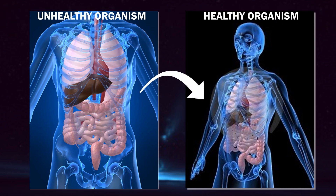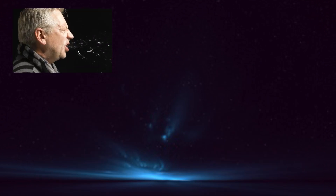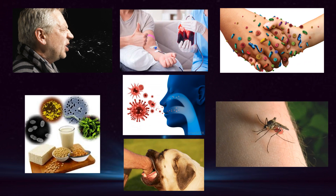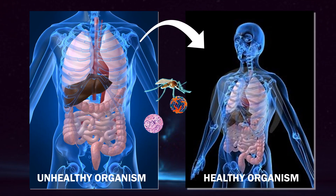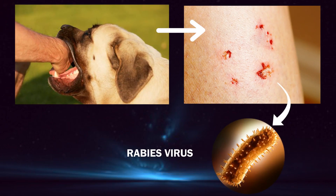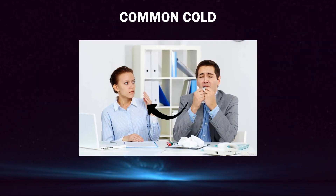These microbes can be transmitted from an unhealthy organism to a healthy organism by means such as sneeze, blood, touch, food, air, bite, carriers, etc. For example, malaria and dengue are communicable diseases as they spread from a healthy person to an unhealthy person through mosquitoes. Rabies is a communicable disease which spreads from dogs to humans. The common cold can also be transmitted from an unhealthy person to a healthy one through sneezing.